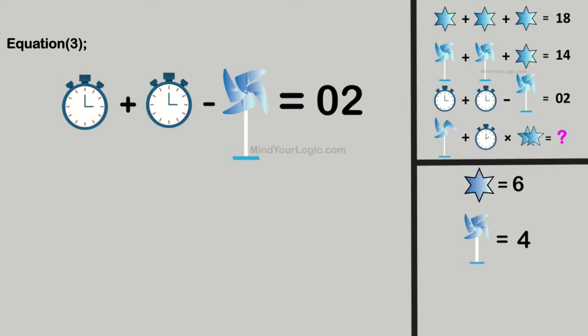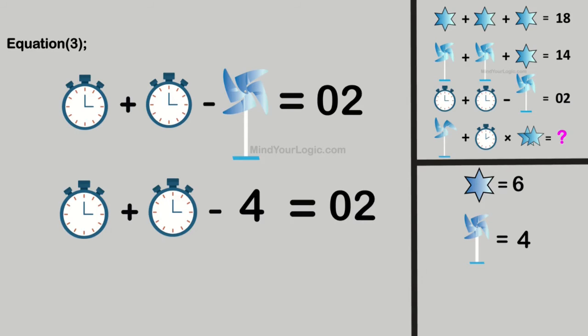Substitute the value of the windmill in equation 3. On simplifying, we get the value of the clock is 3.